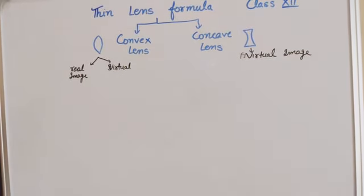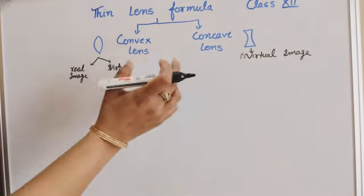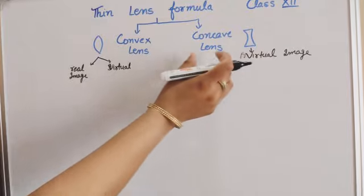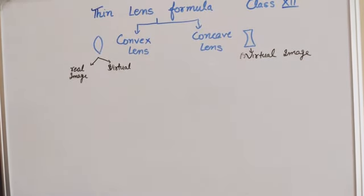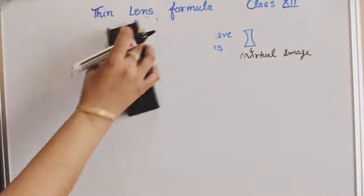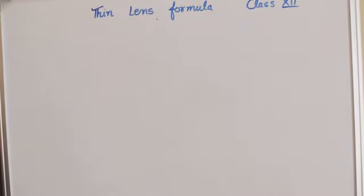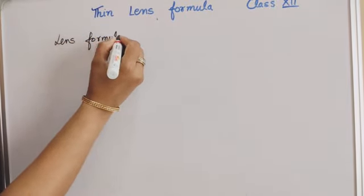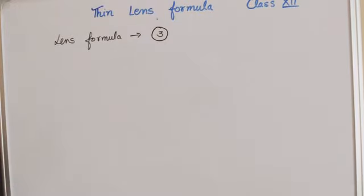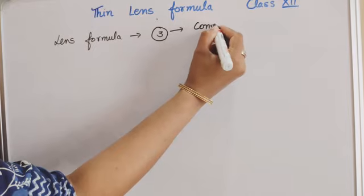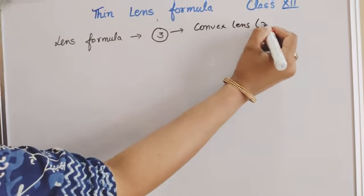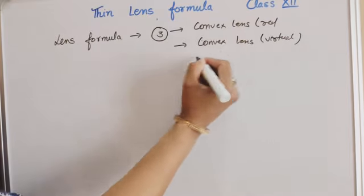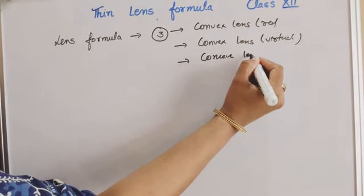We will explain all three cases one by one. There are two types of lenses and three cases: Convex Lens has two cases — real image and virtual image — and Concave Lens has one case — virtual image. You can choose any of the three cases: convex lens with real image, convex lens with virtual image, or concave lens with virtual image.